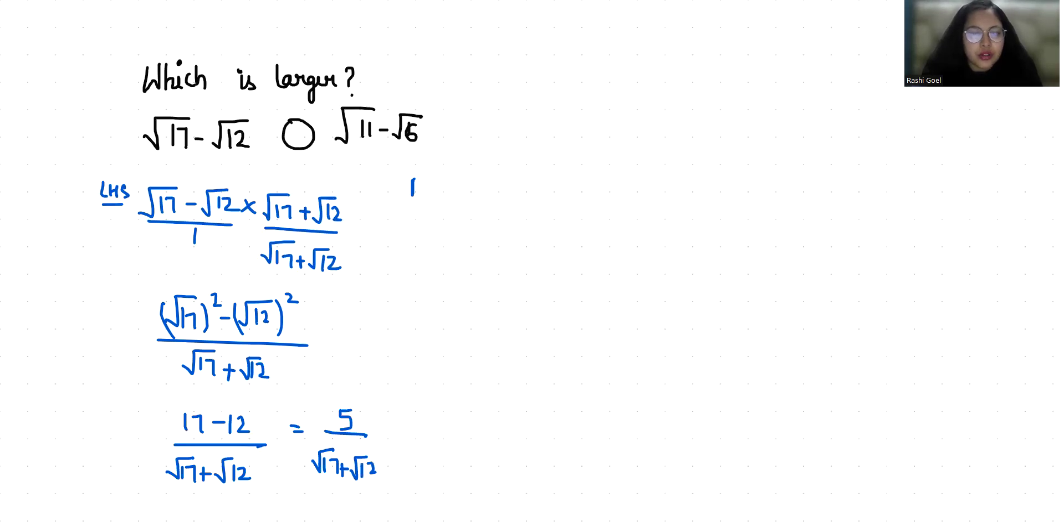Now RHS: root 11 minus root 6. I'm going to multiply with root 11 plus root 6 in numerator as well as in denominator. So it becomes root 11 square minus root 6 square by square root of 11 plus square root of 6.